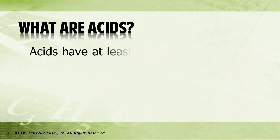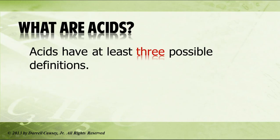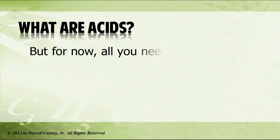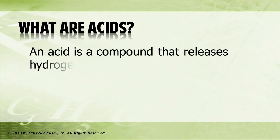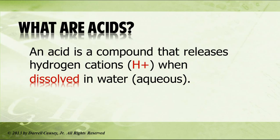What exactly is an acid? Acids have at least three possible definitions, but for right now, all you need to know is that acids are compounds that release hydrogen cations — that's positive ions — when dissolved in water, when they are aqueous.